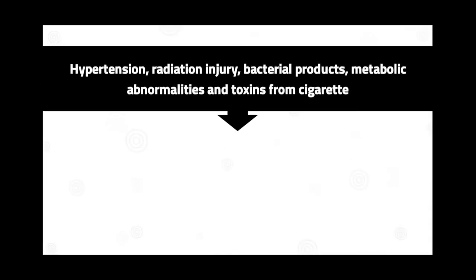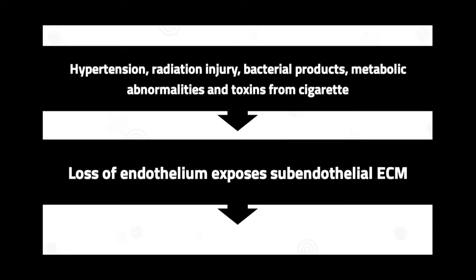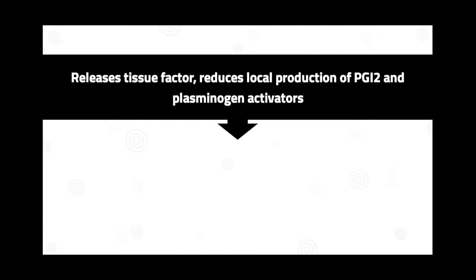When endothelial injury happens, the causes are hypertension, radiation injury, bacterial products, metabolic abnormalities, and toxins from cigarettes. This causes loss of endothelium and exposes the subendothelial ECM (extracellular matrix), which releases tissue factor and reduces local production of PGI-2 (prostacyclin) and plasminogen activators. Reduced PGI-2 leads to more platelet aggregation, and reduced plasminogen activators lead to more fibrin formation.